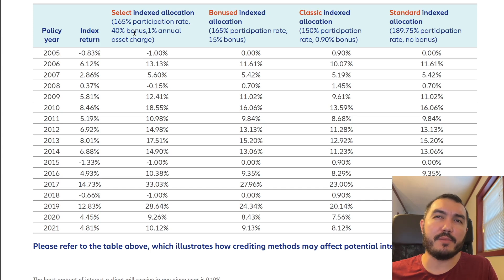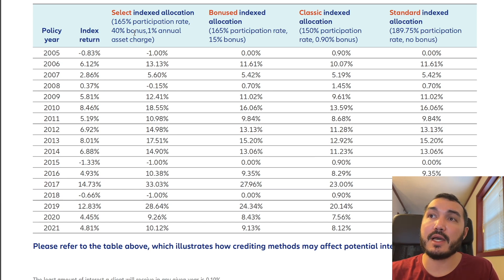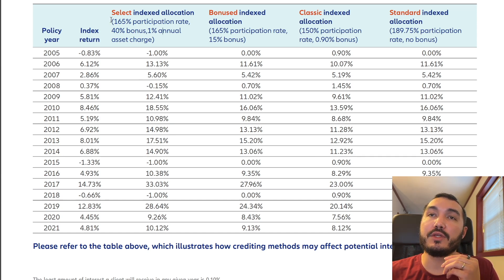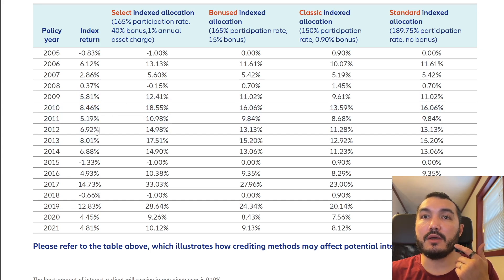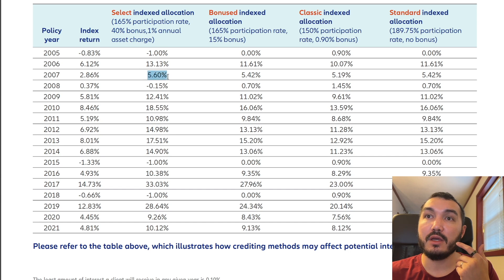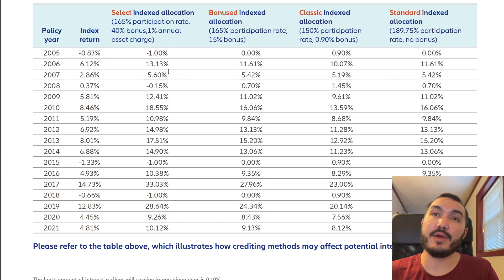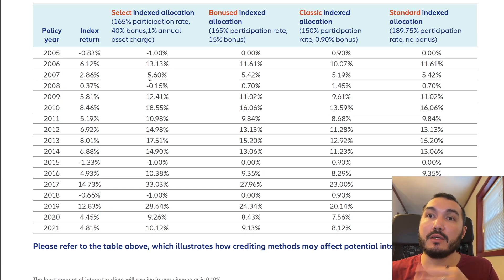If you want access to that spreadsheet, drop a comment below or there'll be a link in the description. Also, there'll be a link if you want to book some time to talk with me. What they're doing is charging you this 1% asset charge so they're buying more call options — it's going to be the biggest return in the long term. The markets go up, and you can see when you compare all these positive years, anything basically over 2.5% you're going to do better with this strategy. So here's 2.86% — in 2007, this was 5.6, 5.42, 5.19, 5.42. This strategy wins out if the market is doing better than 2.5% or so. That's why it's the strategy I'm most heavily using.